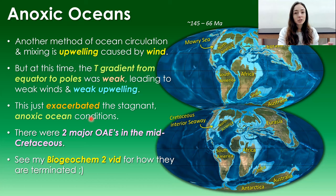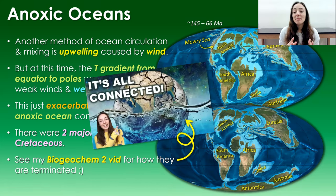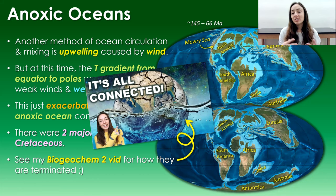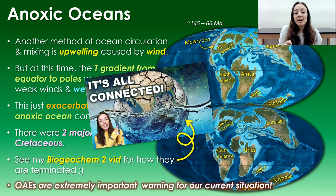These kinds of events where the ocean becomes extremely depleted in oxygen are called Ocean Anoxic Events, or OAEs. There were two major OAEs during the mid-Cretaceous. These events operate through cyclic feedback mechanisms — certain things cause other things that eventually bring conditions back to normal — and I cover that in depth in my biogeochemistry part two video.